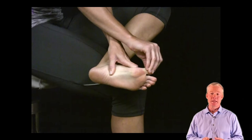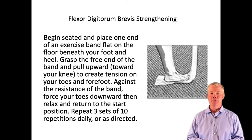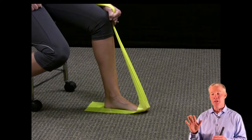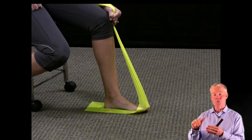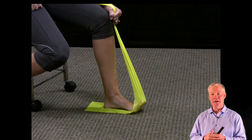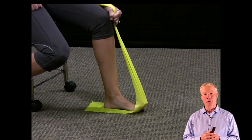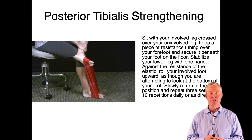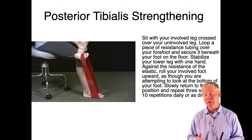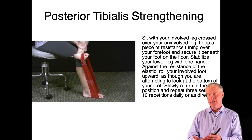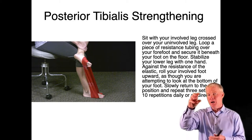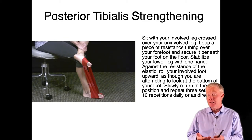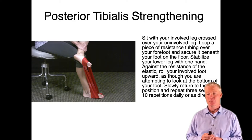Strengthening the muscles of the foot — including the digitorum brevis — can be accomplished by putting a band underneath the patient's foot, having them step on it, and dorsiflexing their foot. We also want to strengthen the posterior tibialis, the muscle that helps support the arch of the foot — running off the tibia behind the medial malleolus to the undersurface of the foot, it's that bungee cord. Tightening it up provides better arch support. Have the patient sit in a chair, look at the undersurface of their foot, then drop it back down, repeating the motion.